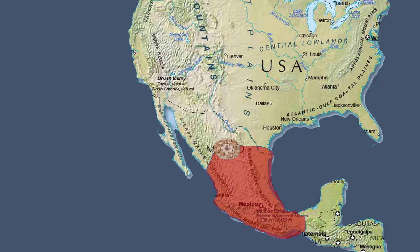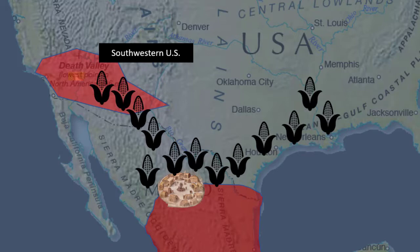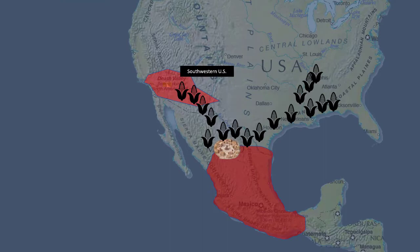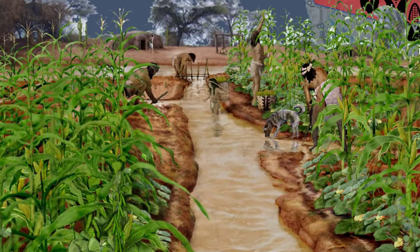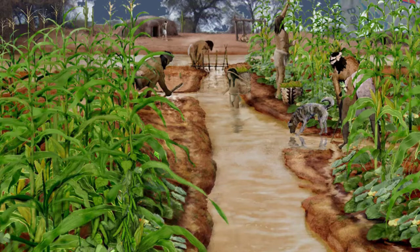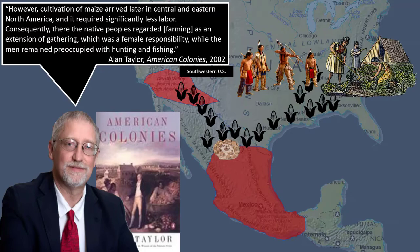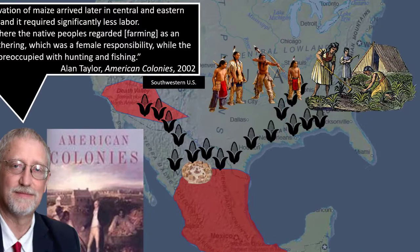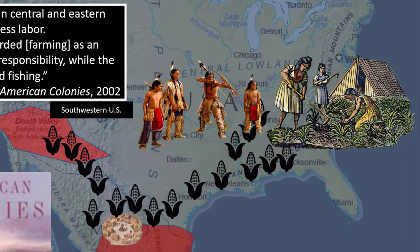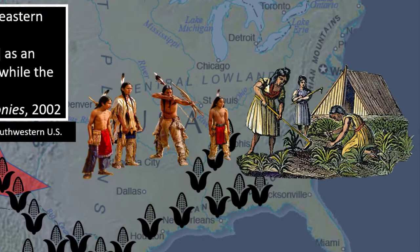The cultivation of maize spread northward into North America in the modern-day United States. In the American Southwest, Indian men reduced their hunting and became primarily the cultivators of maize, because in their relatively arid regions, maize fields required laborious construction of irrigation ponds, dams, and ditches. However, in Central and Eastern North America, things were different. As Alan Taylor notes, the cultivation of maize arrived later in these regions and required significantly less labor. Consequently, the native peoples regarded farming as an extension of gathering, which was a female responsibility, while the men remained preoccupied with hunting and fishing. This is an important distinction.